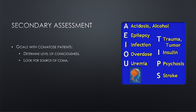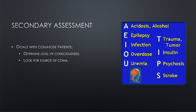When you have an unresponsive patient, you have two main goals: determine their level of consciousness — are they truly unresponsive, responding to pain, or experiencing a stroke and unable to communicate — and look for the source of coma using AEIOU TIPS. This mnemonic covers the most common causes of altered mental status: Acidosis/Alcohol, Epilepsy, Infection, Overdose, Uremia, Trauma/Tumor, Insulin (hypoglycemia), Psychosis, and Stroke. It gives you a good universal differential for any patient with altered mental status.